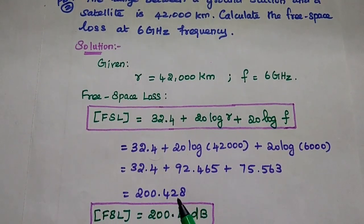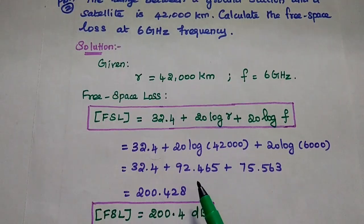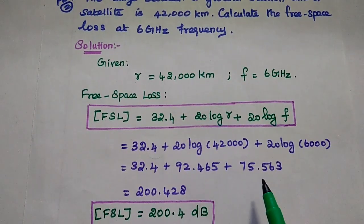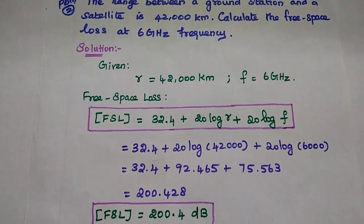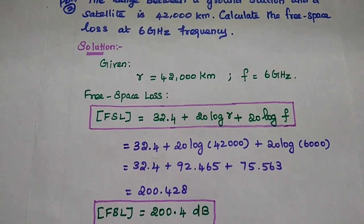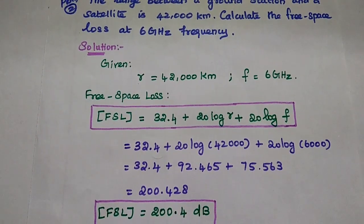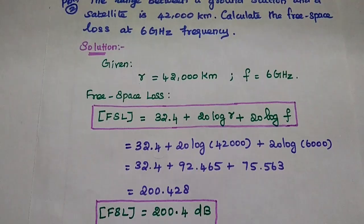We can get the values 32.4 plus 92.465 plus 75.563. We can add all those values to get the free space loss at 200.4 dB. This is the answer.